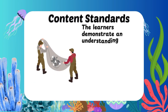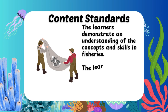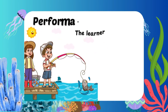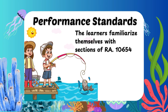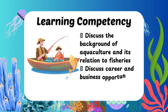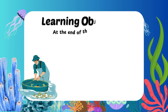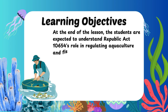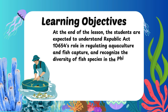Content Standards: The learners demonstrate an understanding of the concepts and skills in fisheries and food processing. Performance Standards: The learners familiarize themselves with sections of RA 10654. Learning Competency: Discuss the background of aquaculture and its relation to fisheries, and discuss career and business opportunities related to fisheries. Learning Objectives: At the end of the lesson, students are expected to understand Republic Act 10654's role in regulating aquaculture and fish capture, and recognize the diversity of fish species in the Philippines.